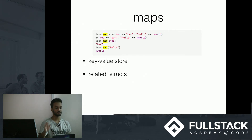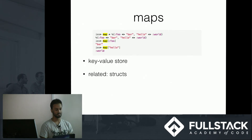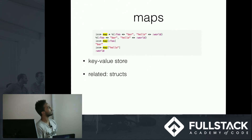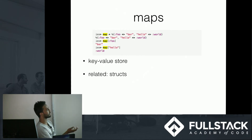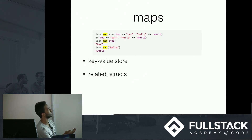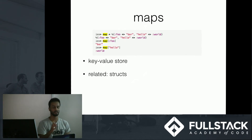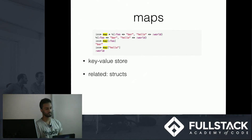Maps are your key-value stores, kind of like object literals except you don't have objects — it's just pure data. They're related to another thing called structs. Structs are also maps in Elixir, except with structs you set default values upfront, whereas with maps you can add properties dynamically.